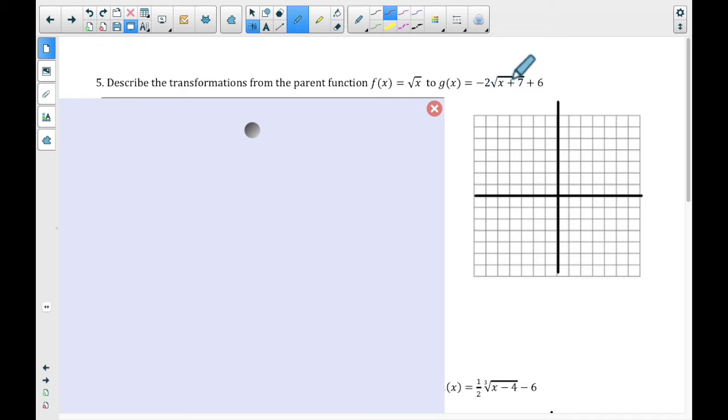So what does a negative do? What does a 2 do? What does a 7 do? And what does a 6 do? So there are four transformations here. Will you take a second to try to make sense of some of those transformations, and then we'll go over them.